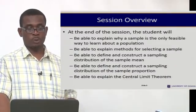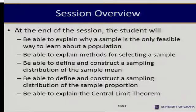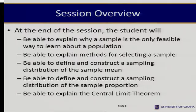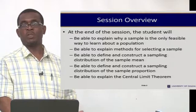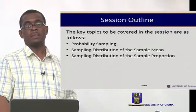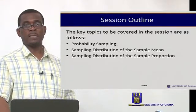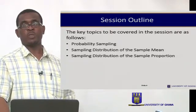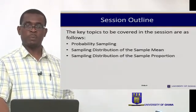At the end of the session, you should be able to explain why a sample is the only feasible way to learn about a population, because sometimes you cannot use the entire population. You should also be able to explain methods of selecting a sample, define and construct a sampling distribution of the mean as well as the proportion. The presentation covers probability sampling, the sampling distribution of the sample mean, and the sample distribution of the sample proportion.